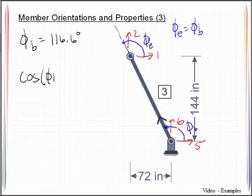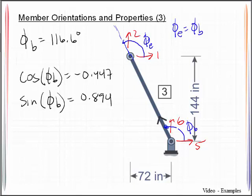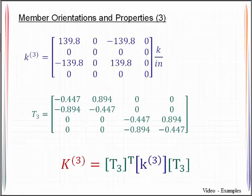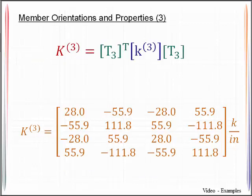I can do the computations on that and get these to be equal to 116.6 degrees. So cosine phi of b is equal to negative 0.447, sine phi of b is equal to 0.894, and when we drop that into the transformation matrix, you will now notice that those same quantities show up there. Here's that member stiffness matrix, 5, 6, 1, and 2.